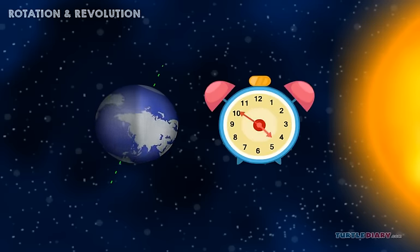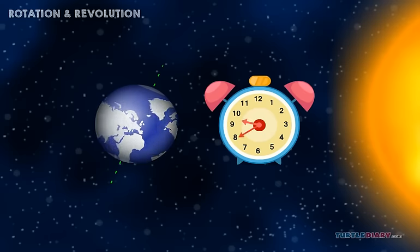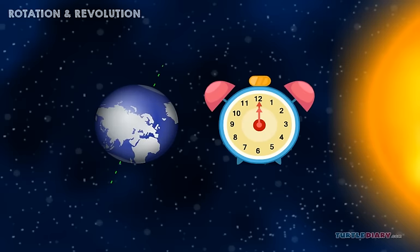It takes 24 hours for the Earth to rotate once. We call this one day.